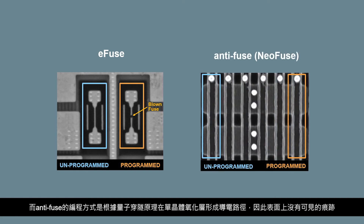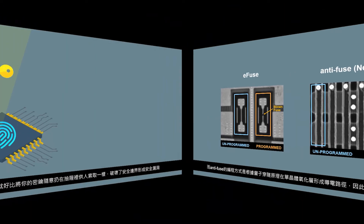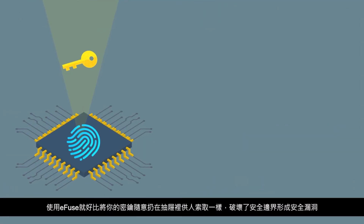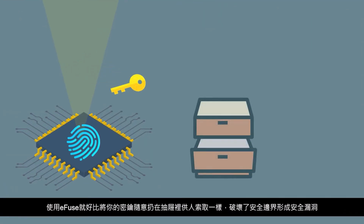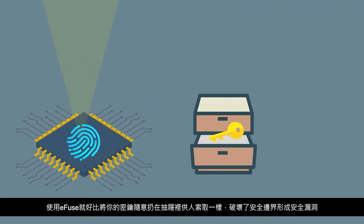In contrast, the anti-fuse OTP is programmed based on the quantum tunneling mechanism, which creates a conductive path without a visible trace on the surface. Using eFuse is like storing the key to your secrets in an unprotected drawer — a surefire way to break the secure boundary and create vulnerabilities.